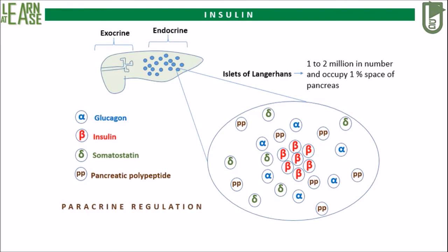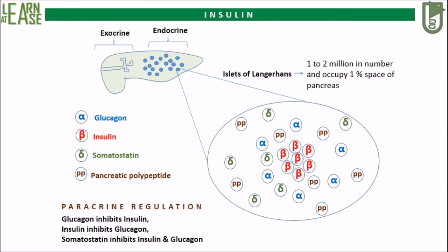When activated beta cells release insulin, it will inhibit alpha cells from secreting glucagon. In the same way, glucagon secretion will inhibit beta cells from secreting insulin, and secretion of somatostatin will inhibit the release of both insulin and glucagon.